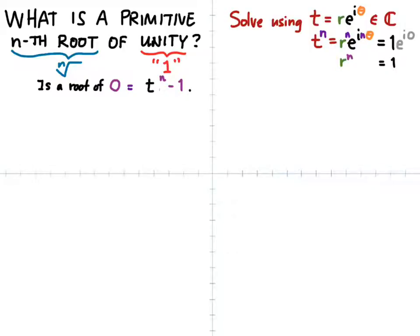then the modulus of that complex number, r to the n, has to be equal to 1. And since r, the modulus, is always real and non-negative, we can take r just to be equal to 1.